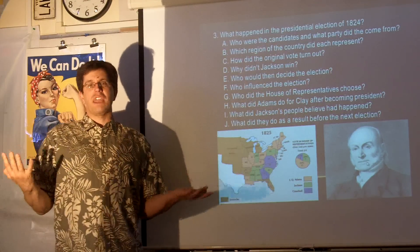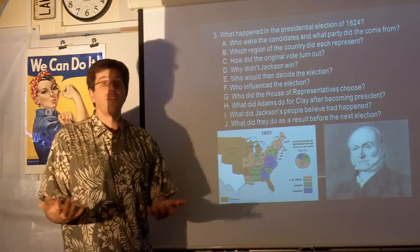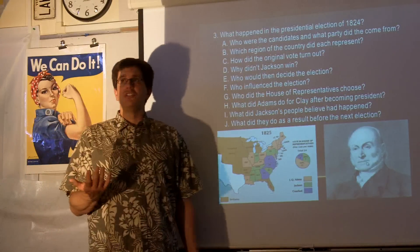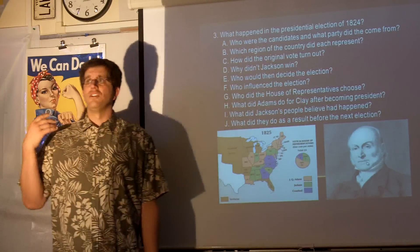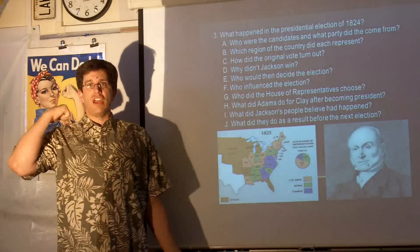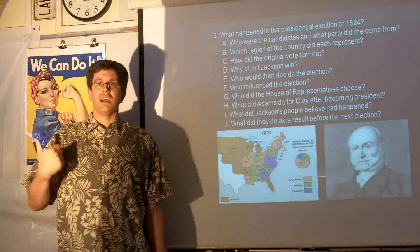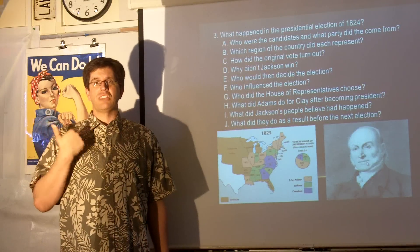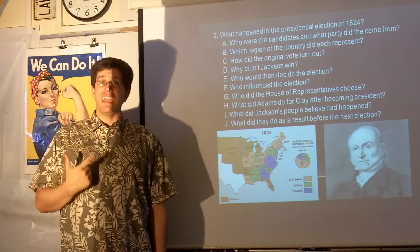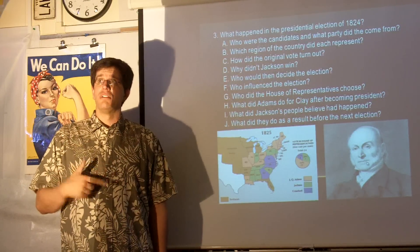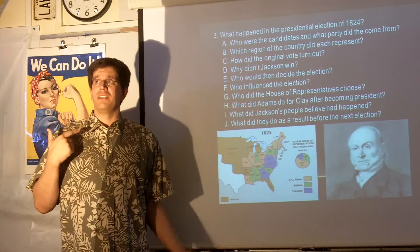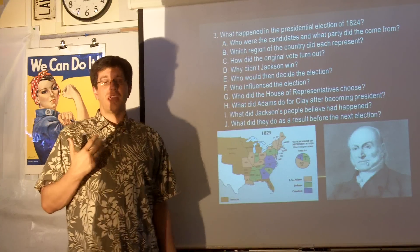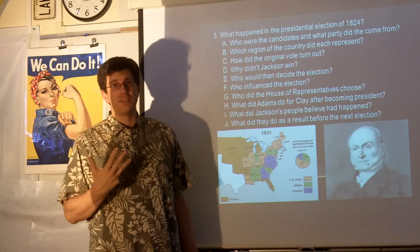The four candidates split all the electoral votes. At the Electoral College, Andrew Jackson had 99 votes, John Quincy Adams had 84, William Crawford had 41, and Henry Clay had 37.